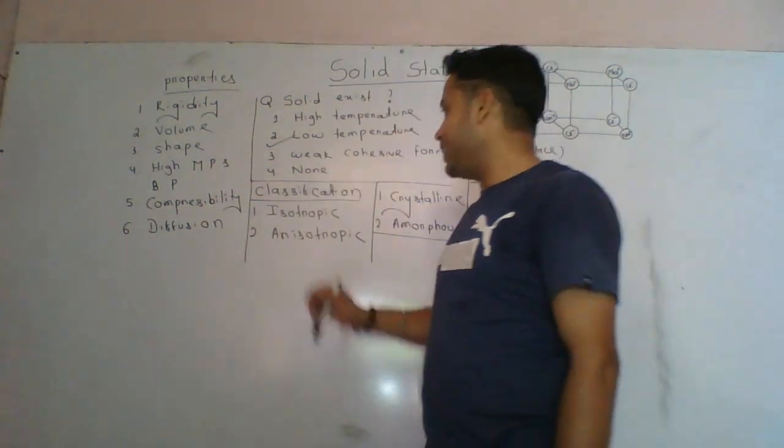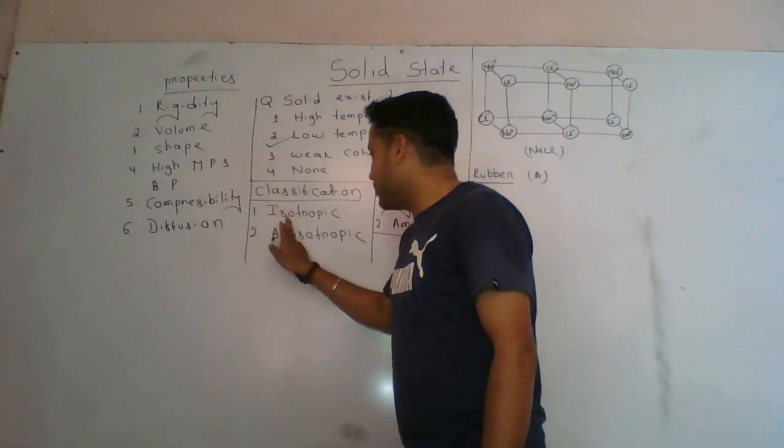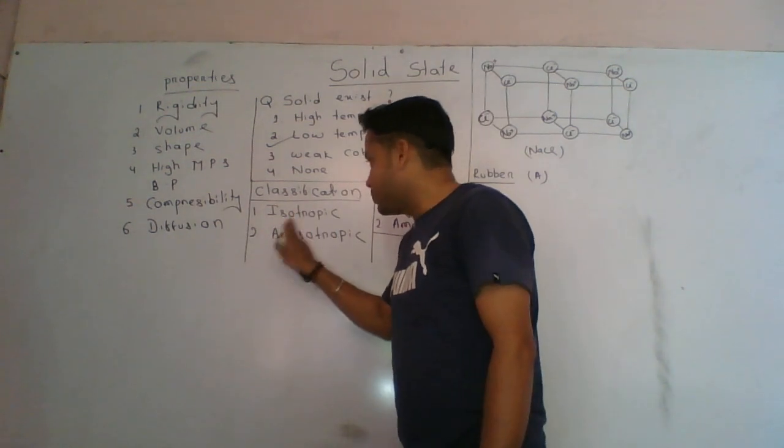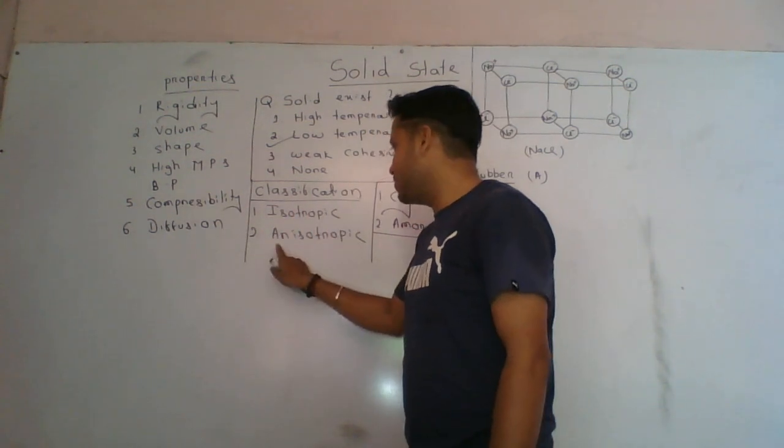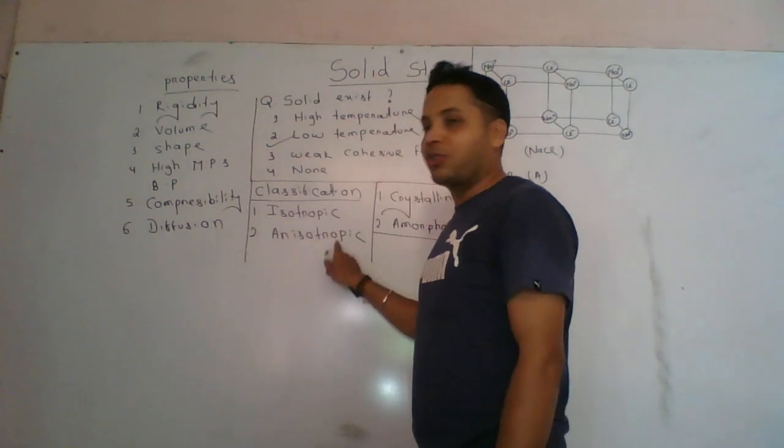Now we discuss the classification of solids. Classification: first is isotropic, and second is anisotropic.